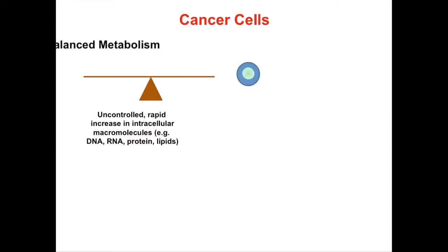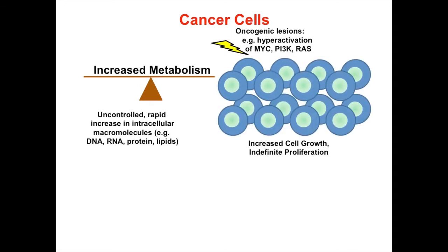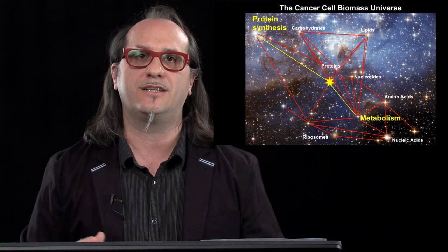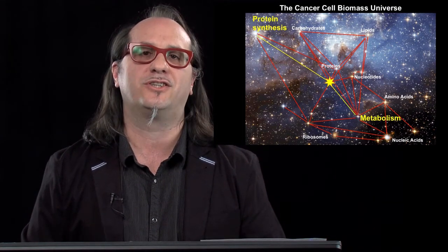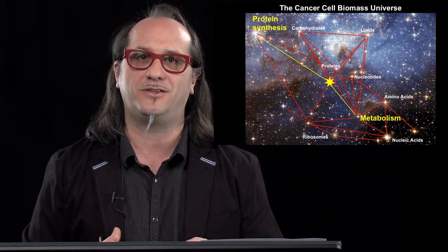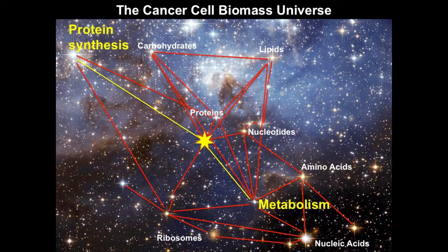Cancer cells, instead, have an uncontrolled growth — an uncontrolled increased metabolism associated with a rapid increase in these macromolecules — and this is associated with indefinite proliferation. Another way to view cell growth and what can be inside a cancer cell is this visualization we call the cancer cell biomass universe, where each node of this constellation represents the constituents of the cancer cell biomass. It's important to understand that each of these constituents needs to be coordinated in order to increase the overall cell biomass.